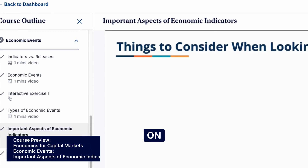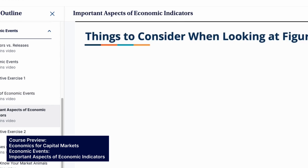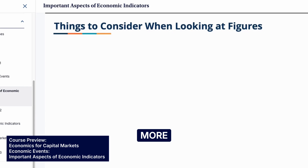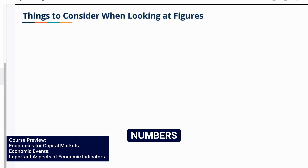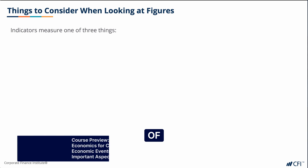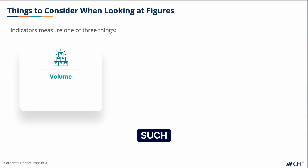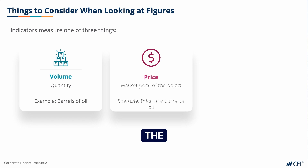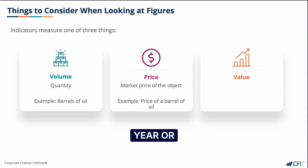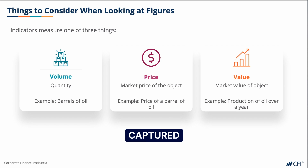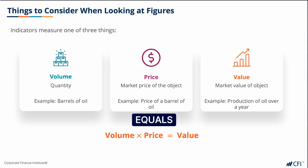Let's go back and focus on economic indicators for a moment. As you will recall, economic indicators tend to be more numbers based. The numbers generally fall into three measures. The first is volume — that's generally a quantity such as barrels of oil or numbers of homes sold. The second type is price, which is a market price of that thing, say the price of a barrel of oil or the consumer price index. Lastly we'll see the market value of something, say production of oil over a year or a set of interest rates. The relationship between these three types of figures can be captured in a very straightforward formula: volume times price equals value.